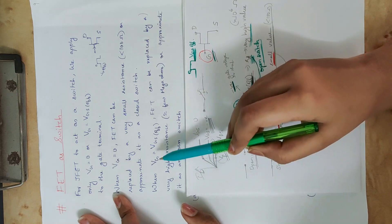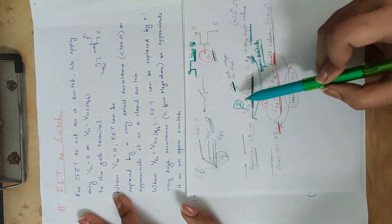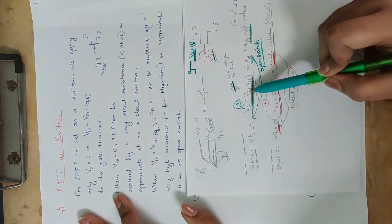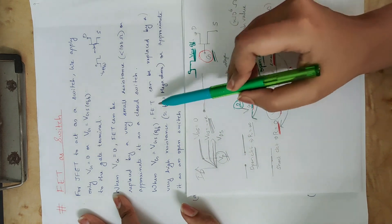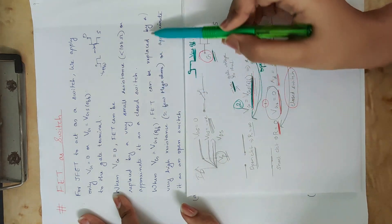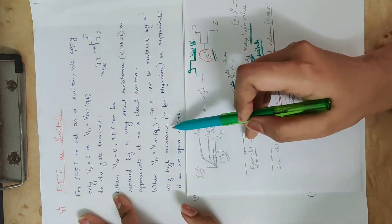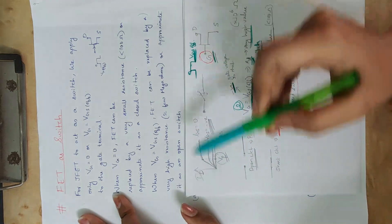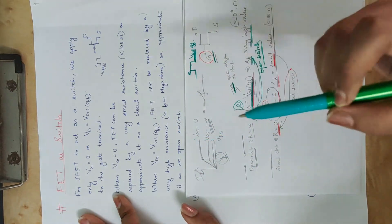When VGS equals VGS off, the FET has high resistance — it can be replaced by a very high resistance or approximated as an open switch.